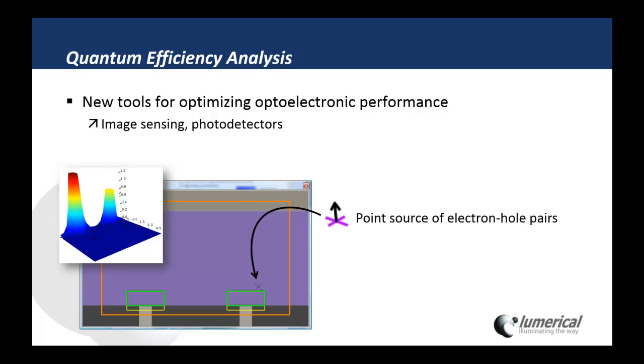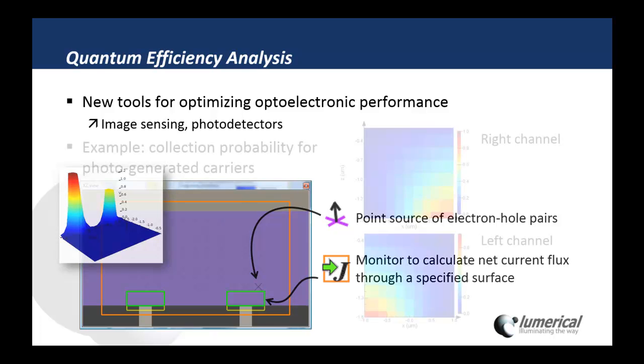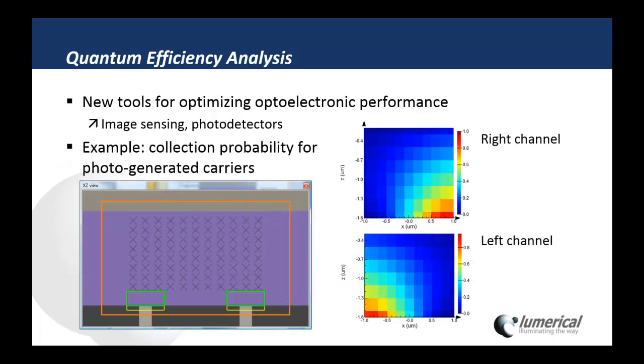We can include a point source of electron-hole pairs and monitor the net current flux through a specified surface. We can, for example, look at the collection probability for photo-generated carriers within the structure. By scanning the point source over the simulation region, we can look at the detection efficiency in the right channel and the left channel of the structure.